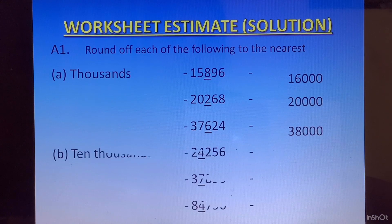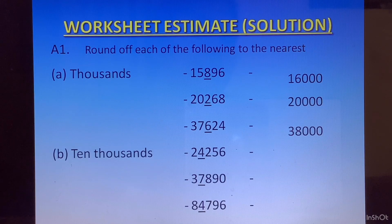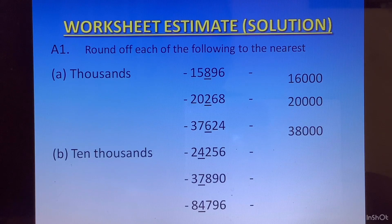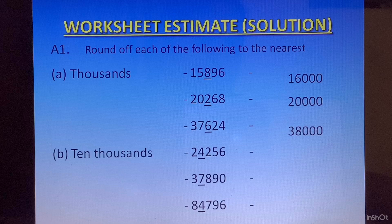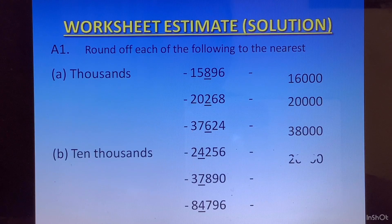The second part of the question: we have to round off to the nearest ten-thousands place, so we will look at the thousands place. In the first case, 4 is at the thousands place. 4 is less than 5, so we will not change the digit at the ten-thousands place. All the digits on the right — 4, 2, 5, 6 — will get converted to 0. The answer will be 20000.